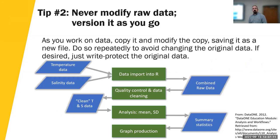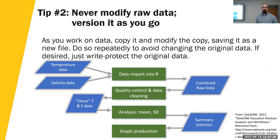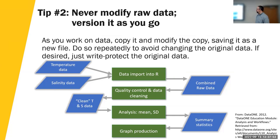The second tip is versioning your data. Generally, you don't want to modify your raw data. As you go, you want to make versions and copies of your data at different stages, so you can always go back in case you make a mistake intentionally or unintentionally. Looking at this flowchart, the blue parallelograms are data sets and the green rectangles are stages in the research. In this case, the person is taking raw data, importing it into R, with some internal file format.